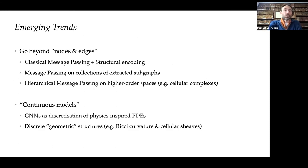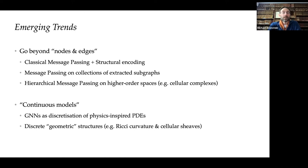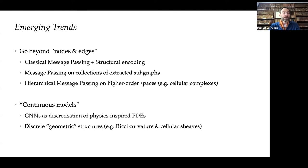The two broad trends I want to discuss are: first, going beyond nodes and edges — replacing the graph with something else as the computational fabric, including structural encoding, message passing on collections of subgraphs, and hierarchical or topological message passing on higher-order spaces such as cellular or simplicial complexes. Second, continuous models — using physical systems as a metaphor, deriving graph neural networks from discretization of differential equations, and introducing geometry via discrete structures such as Ricci curvature or cellular sheaves.